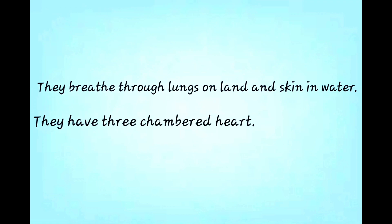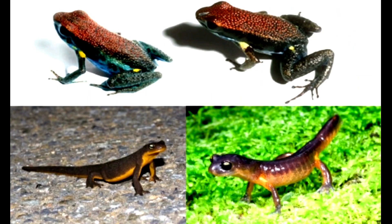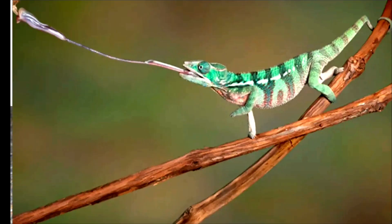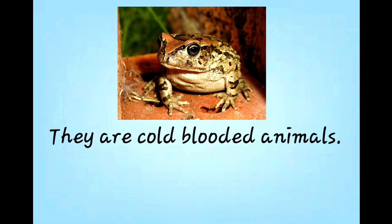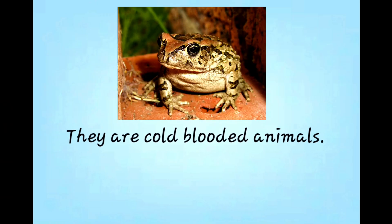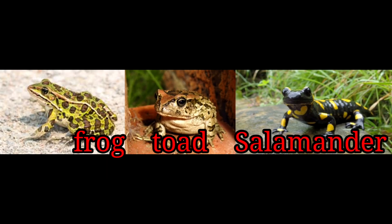They have a three-chambered heart. They are oviparous animals. Two pairs of limbs help them for locomotion. They have a long tongue which helps them to catch their prey. They are cold-blooded animals. Some examples of Class Amphibia are frog, toad, and salamander.